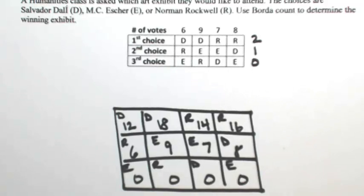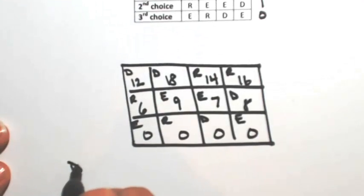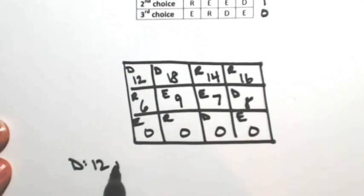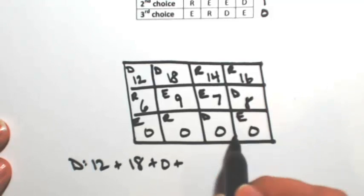So to figure out who the winner is, we're just going to go through and count up how many points they have. Let's start with Dali. So 12, 18, and 0, and 8.